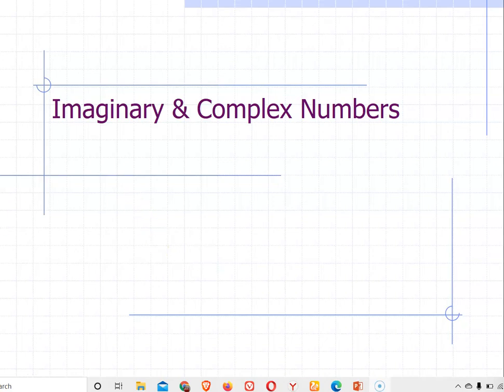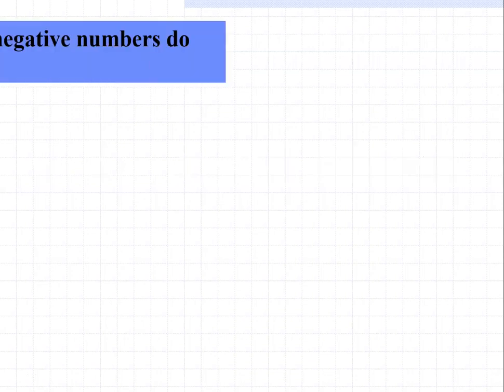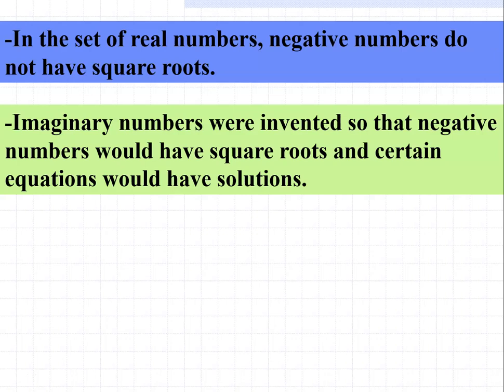In this video we are going to learn about imaginary and complex numbers. Before, we said that the square root of negative 1 has no real solution — in the set of real numbers, negative numbers do not have square roots. Imaginary numbers were invented so that negative numbers would have square roots and certain equations would have solutions.